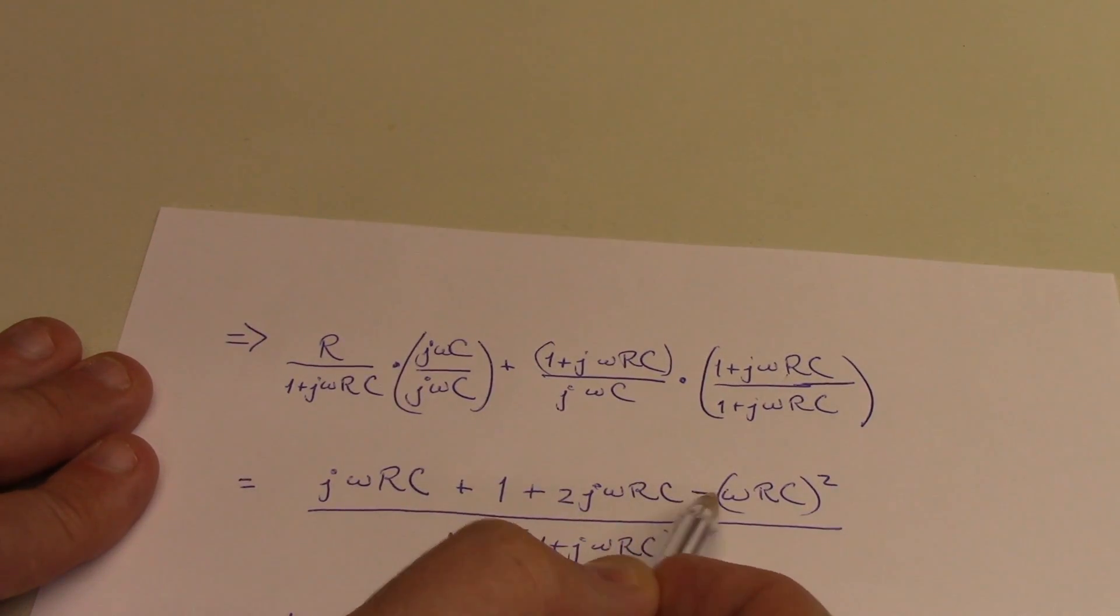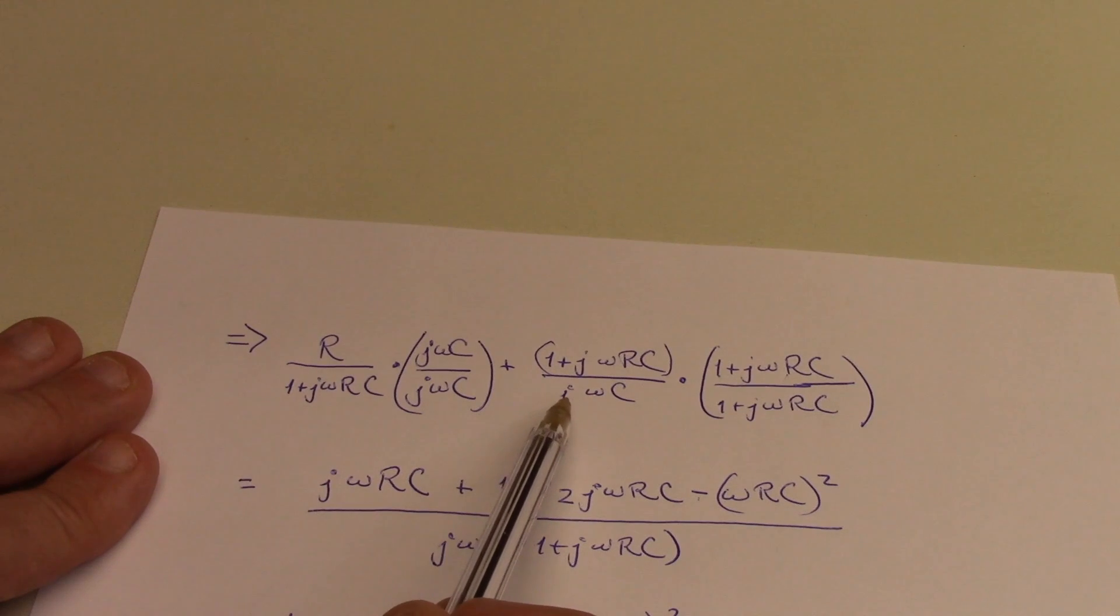But I know that j squared is just minus 1. So I can take that out here. I've got minus quantity omega rc squared. And the denominator is now just j omega c times 1 plus j omega rc down here.